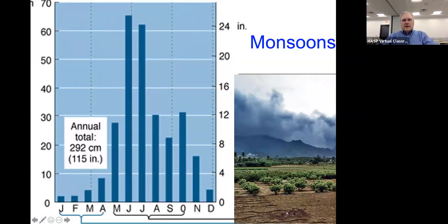Looking at a quick picture of the monsoons, notice that there's about 115 inches of rain for the year. Most of it falls in June, July, August, through October. This is the time when the winter monsoon comes along and you hardly get any rain at all, so you get the feeling that it really comes in during one particular time.